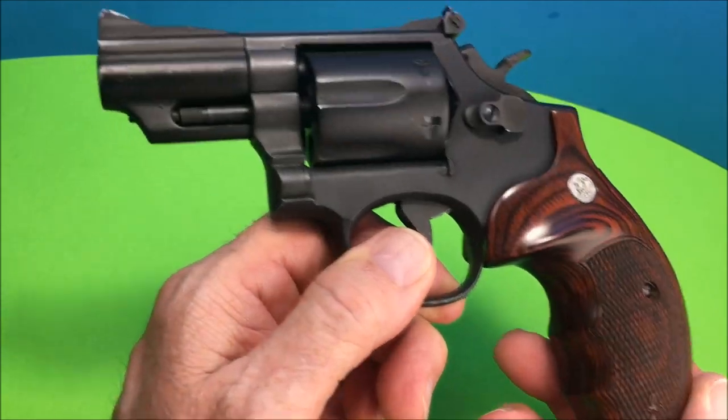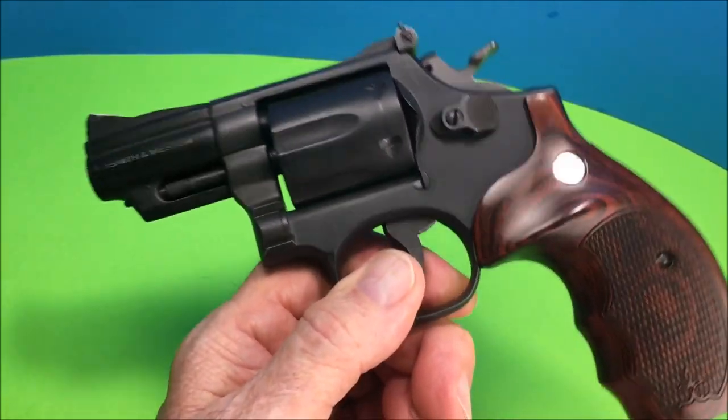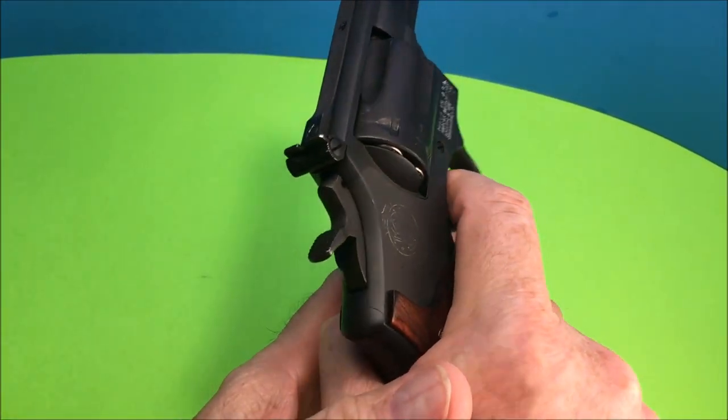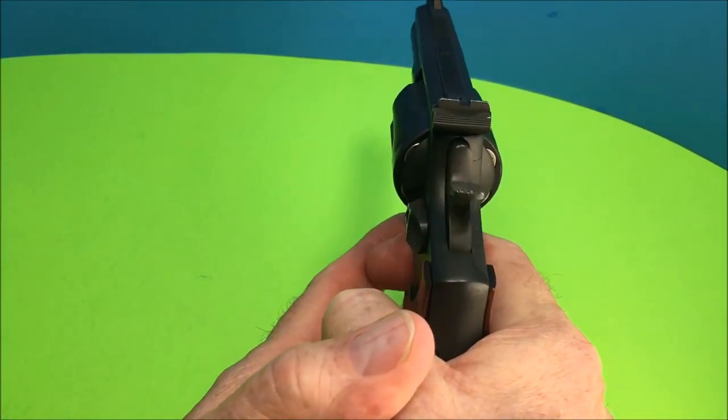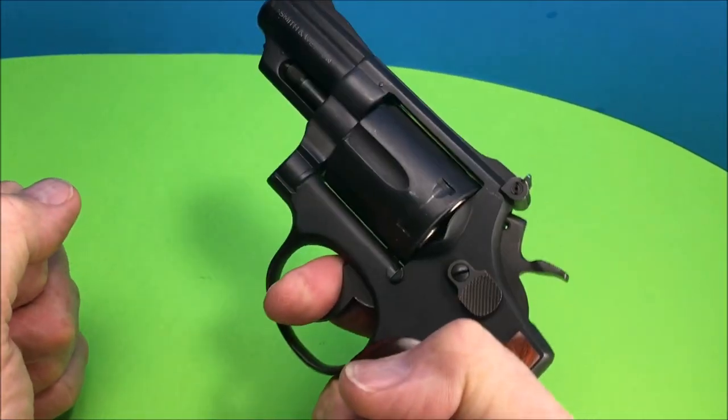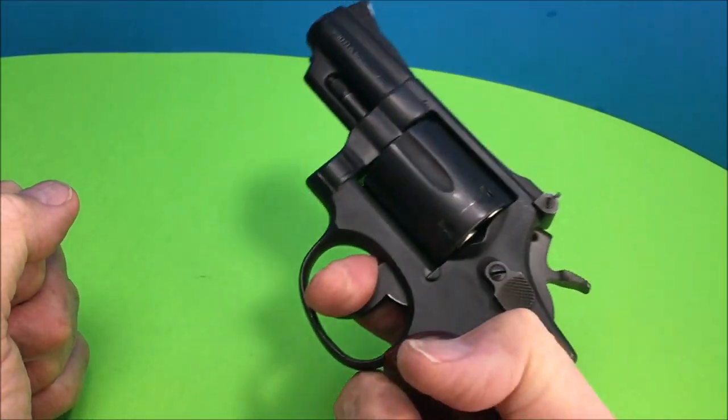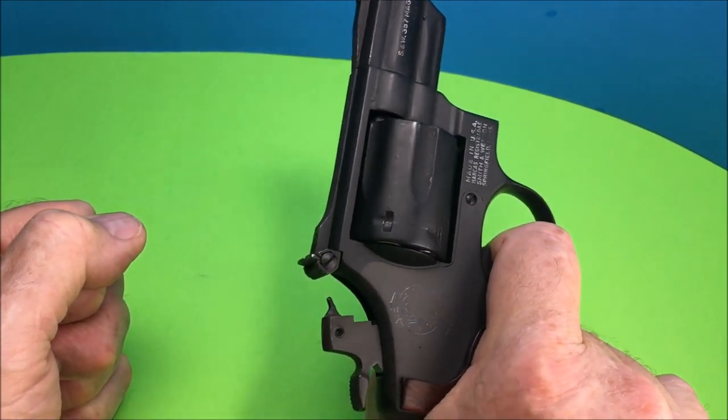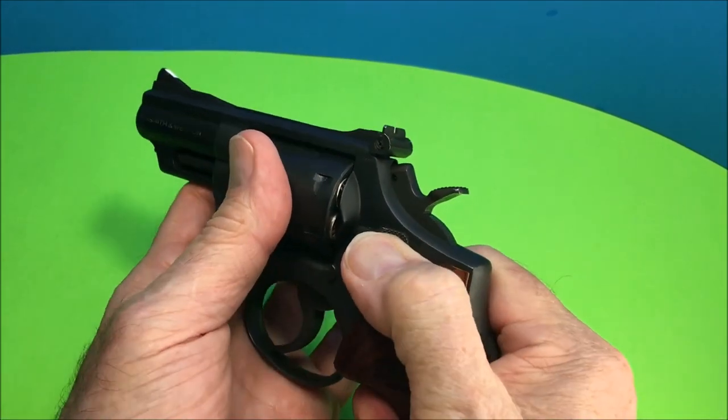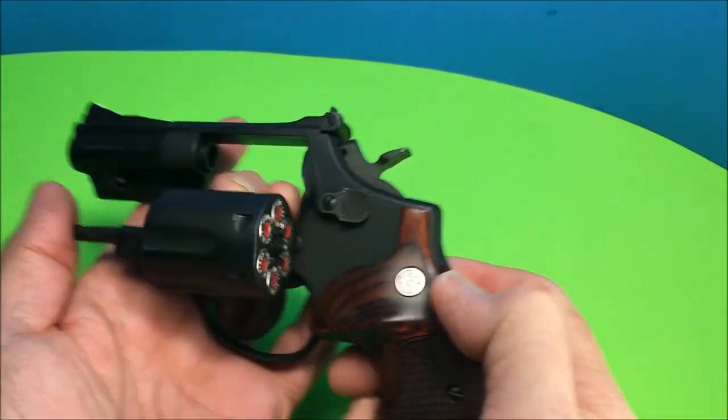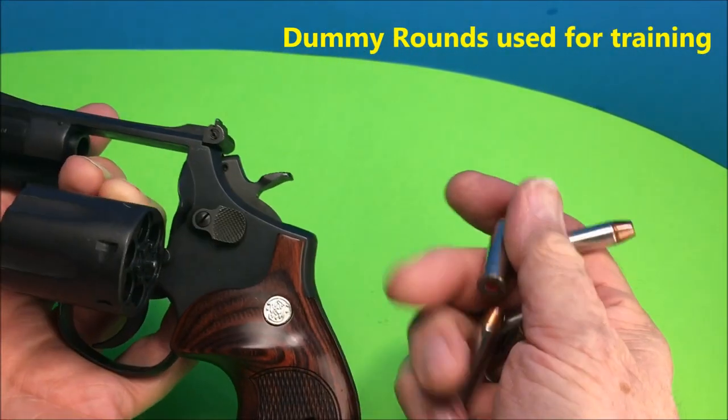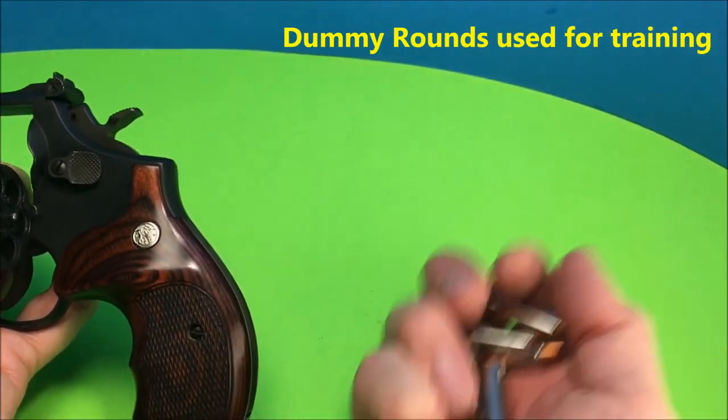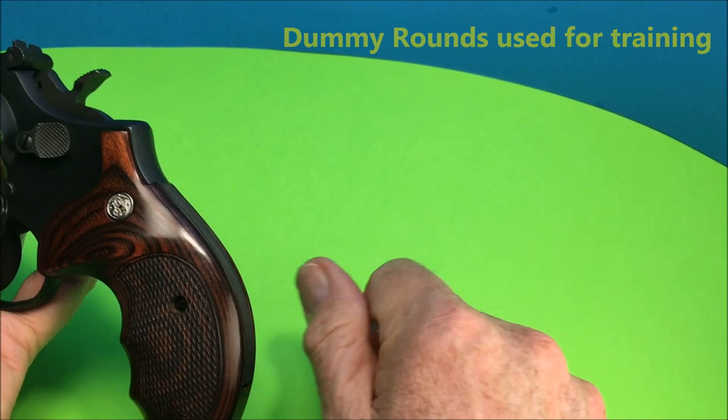Smith & Wesson, model 19-3, snub nose, heavy, really stout, very strong weapon here. Now, 357 Magnum, with no problem, it's our dummy 357 Magnum rounds, they feel like the real thing, they're heavy, they're great for practicing.